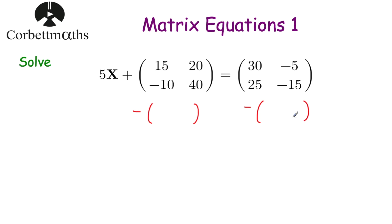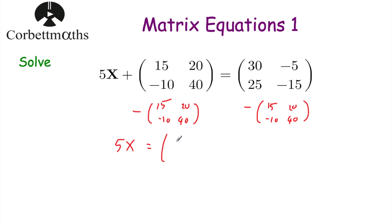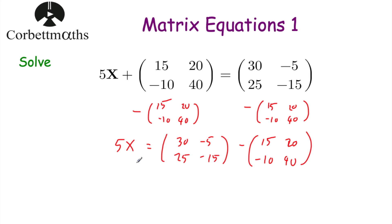So we'll take away [15, 20, -10, 40] from the left-hand side and also from the right-hand side. On the left-hand side we're taking away that matrix to get rid of it, so we're just left with 5x. On the right-hand side we had [30, -5, 25, -15] and we're taking away [15, 20, -10, 40]. So 5x equals: 30-15=15, -5-20=-25, 25-(-10)=35, and -15-40=-55.